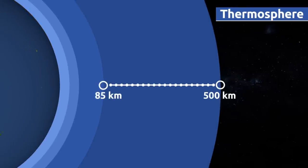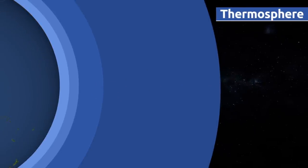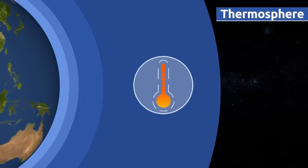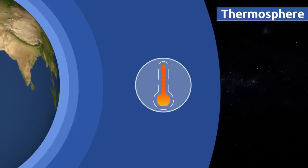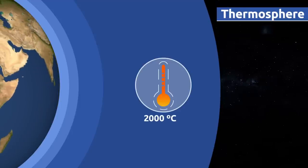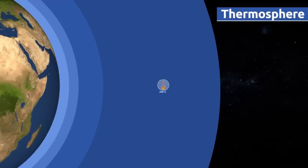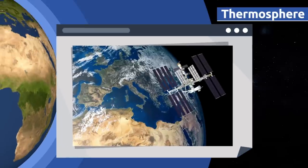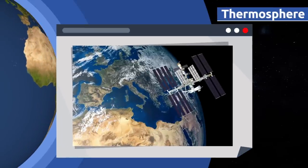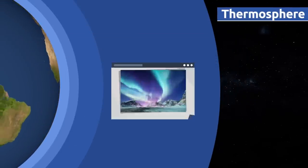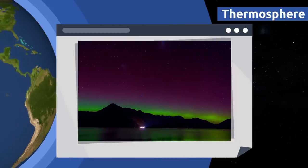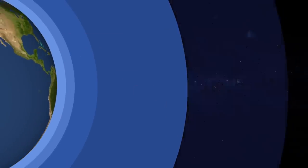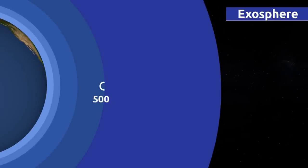The thermosphere extends from 85 to 500 kilometers above sea level and is the warmest of all five layers. Air temperature on the surface of the earth is kept constant thanks to the thermosphere, where temperatures can rise to more than 2,000 degrees Celsius. The International Space Station orbits the earth within the thermosphere. Impressive natural phenomena like the northern and southern lights also occur in the thermosphere.